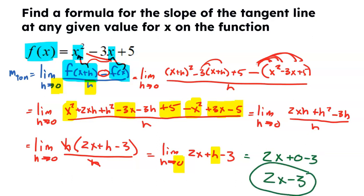Plugging in 0 for H, I get 2X plus 0 minus 3, which is 2X minus 3. There it is — a formula to find the slope of the tangent line at any given point. How many points are on this original function? Infinite, millions. This will find me the slope at any one of them. Throw out an X — say 7. Plug it in: 7 times 2 is 14, minus 3 is 11. At X equals 7, the slope is 11. What about negative 1? Plug negative 1 in: 2 times negative 1 is negative 2, minus 3 is negative 5. The slope at negative 1 is negative 5. By keeping it generic using X instead of a specific A, I end with a formula that has X — hence I could use it to find the slope of the tangent line at any given point.